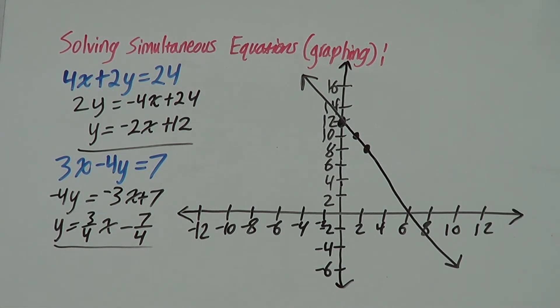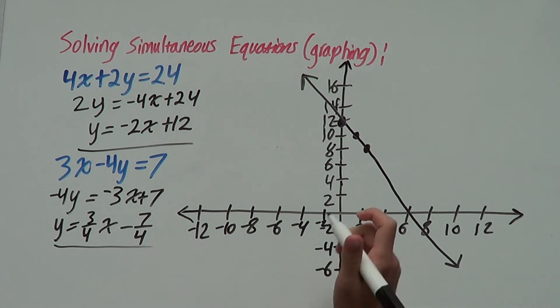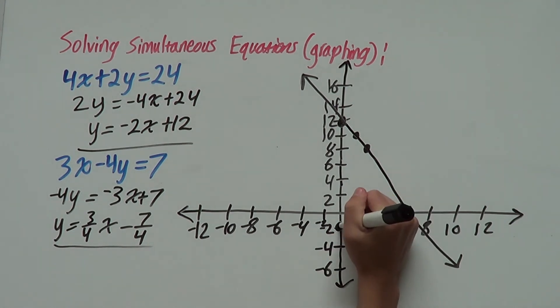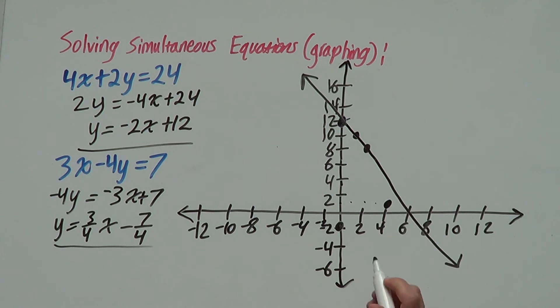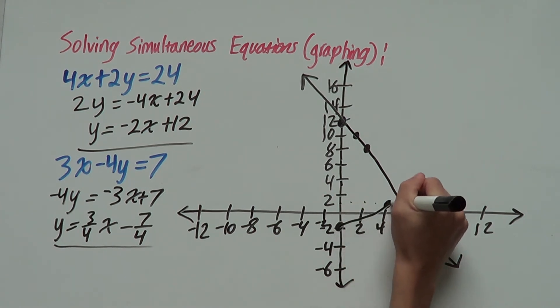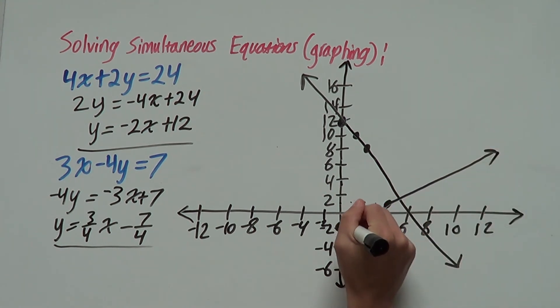So, for our second one, we have y equals 3 over 4x minus 7 over 4. Our y-intercept is 7 over 4 which is nearly negative 2, and our gradient is 3 over 4. So, we rise 3: 1, 2, 3, and we run 4: 1, 2, 3, 4. So, our point will be about here. And that's our second line.